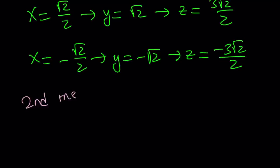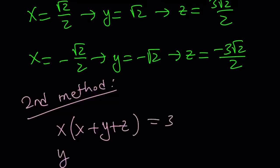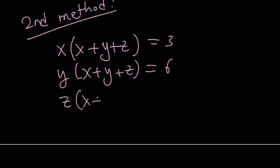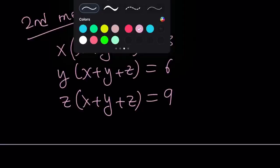Second method. And I'm going to rewrite the original system: x times x plus y plus z is 3, y times x plus y plus z is 6, and z times x plus y plus z is 9. At least these are proportional, right? So that gave us good results. I mean, you can change the numbers around and make it even messier, but you know.